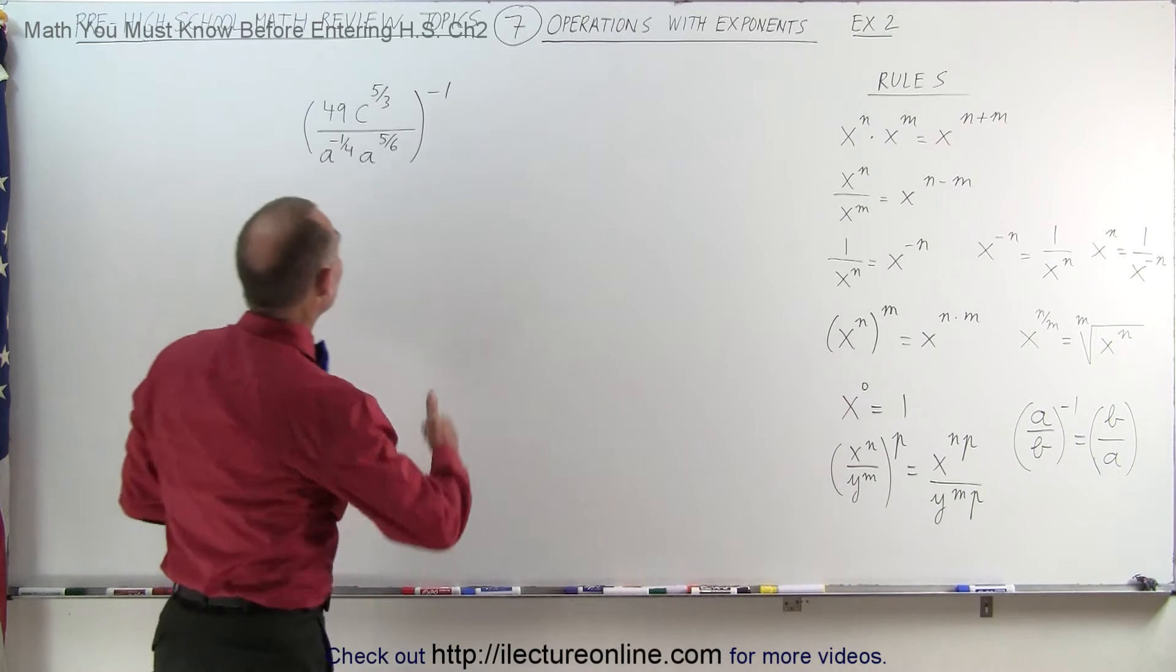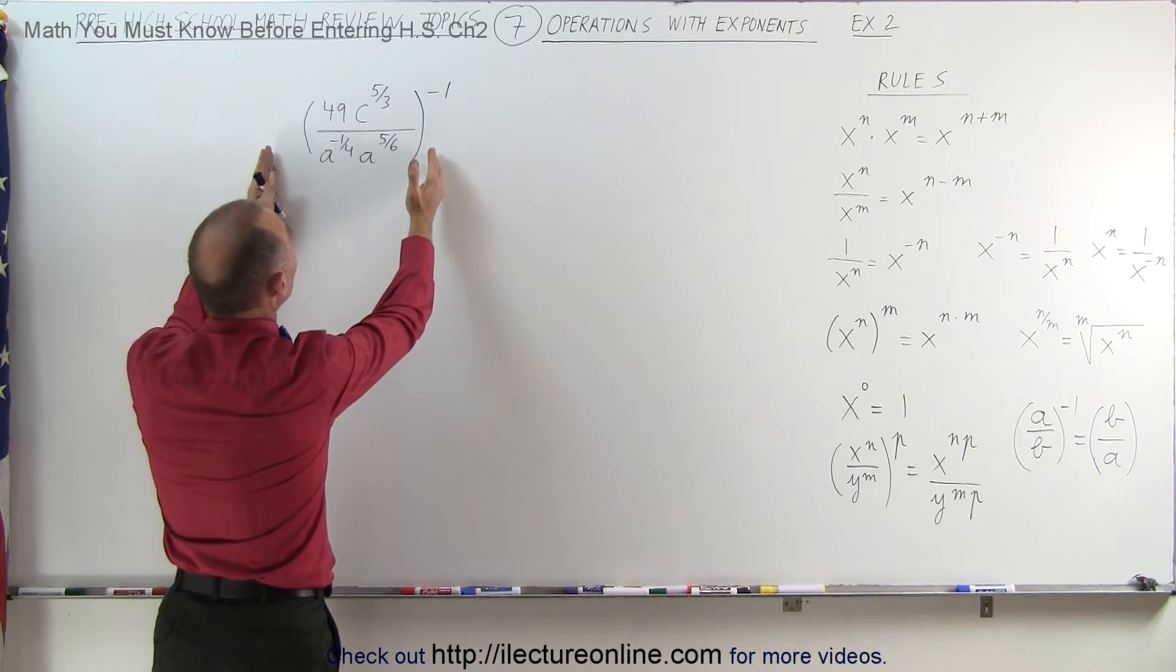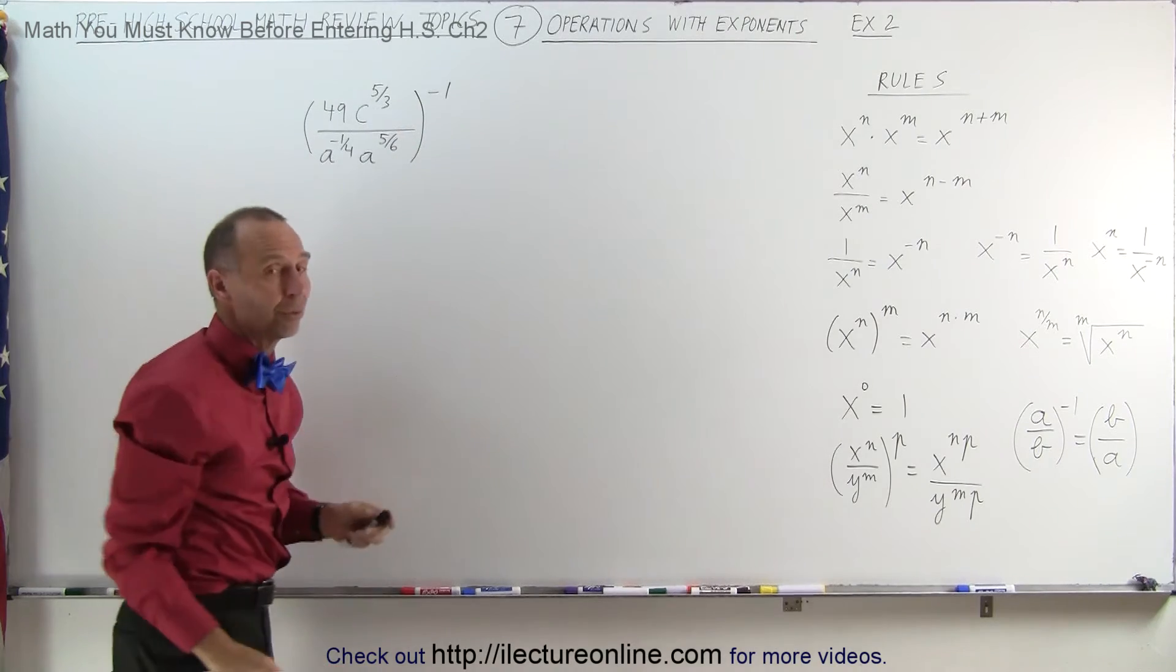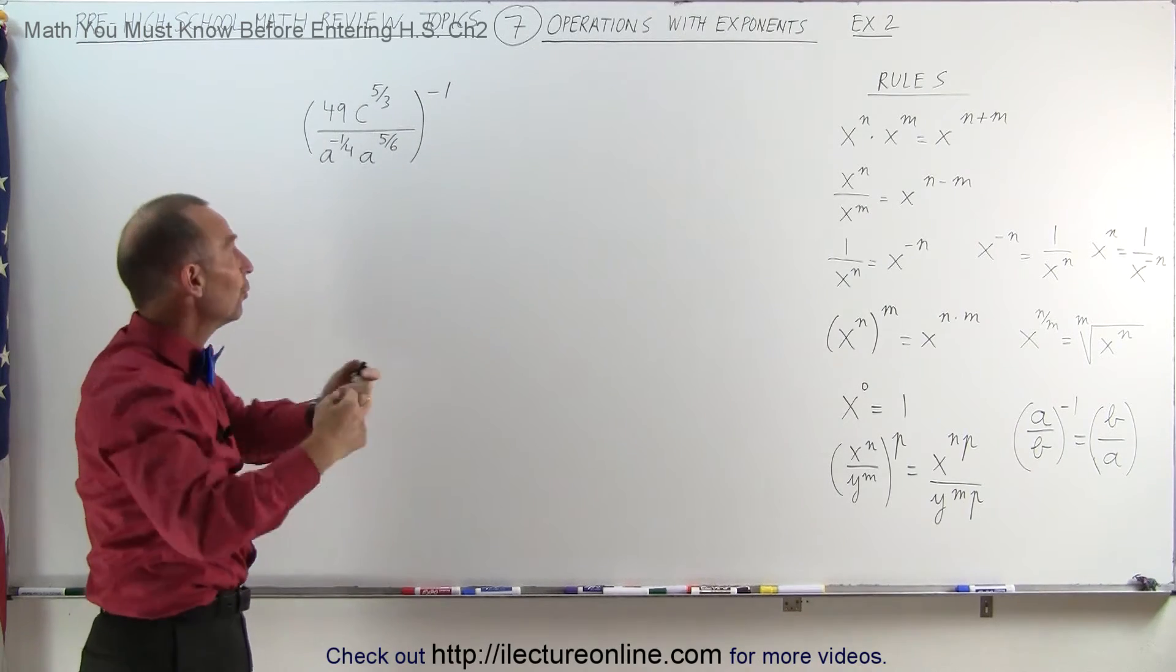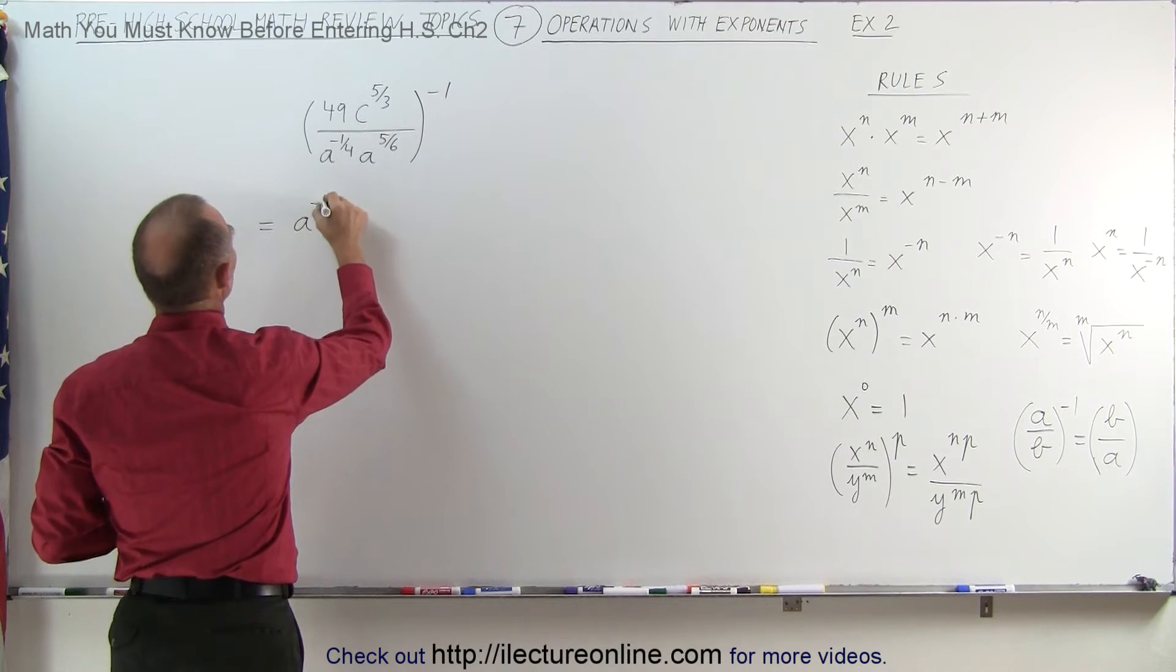The reason I added that rule is when I look at my example here, I have a whole thing right here in parentheses raised to negative 1 power, which means I can simply turn that expression around and write it as a to the minus 1 quarter,